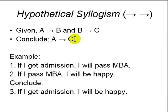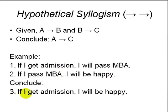For example: if I get admission I will pass MBA, and if I pass MBA I will be happy. From this we can conclude that if I get admission I will be happy — so we can skip the B part.